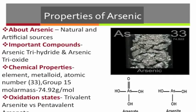Arsenic occurs in a trivalent form called arsenite and a pentavalent form called arsenate. Arsenite is much more toxic than arsenate because it has the ability to inactivate multiple enzymes involved in cellular energy pathways.